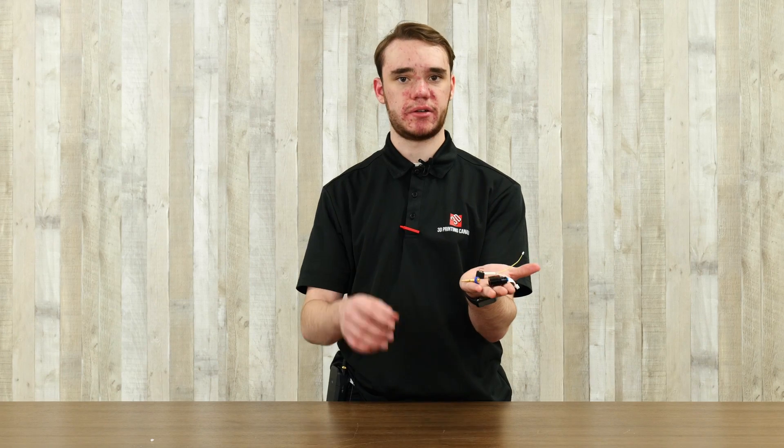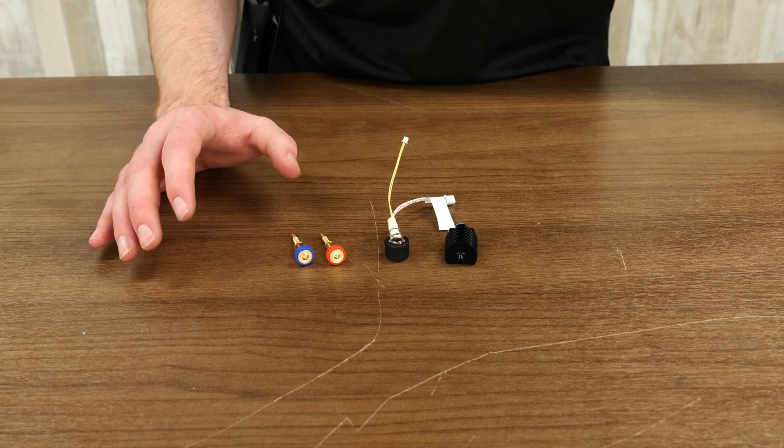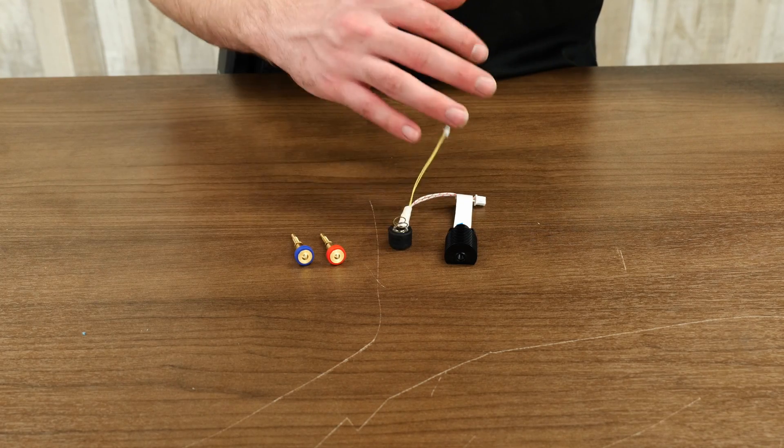Today we're going to be going over Revo hotends, specifically in relation to using them with the S1 series of printer. So I have a Revo hotend all in different pieces here with two nozzles. I'm going to go over a couple of reasons why you might want to upgrade to this nozzle while I assemble it here.